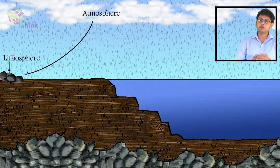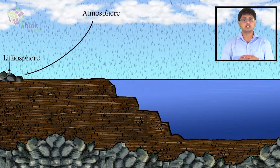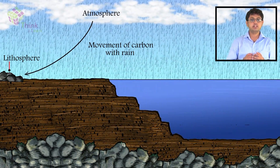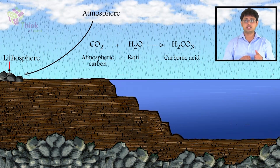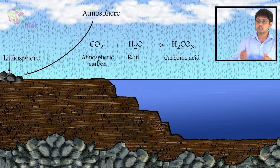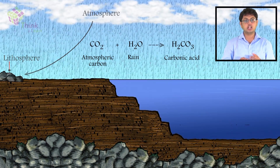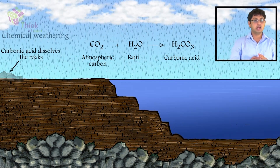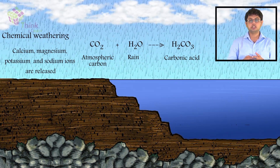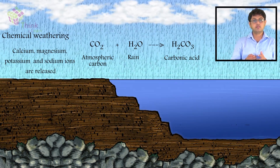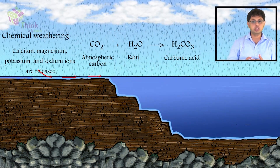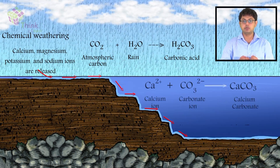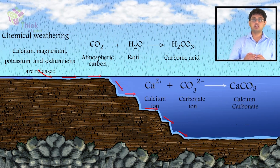The movement of carbon from the atmosphere to the lithosphere begins with rain. Atmospheric carbon combines with water to form a weak acid — carbonic acid — that falls to the surface in rain. The acid dissolves rocks, a process known as chemical weathering, and releases calcium, magnesium, potassium, and sodium ions. Rivers carry these ions to the ocean, where the calcium ions combine with bicarbonate ions to form calcium carbonate.